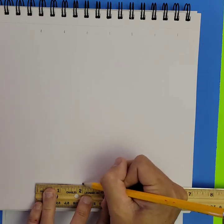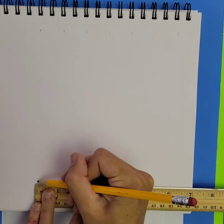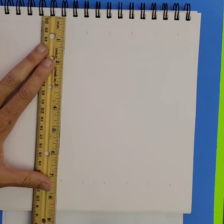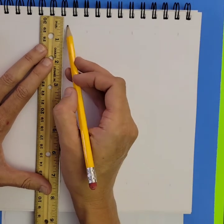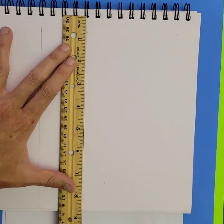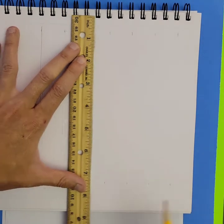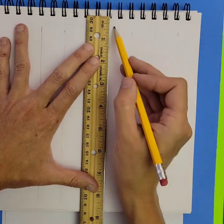So I'm just placing a mark every inch for seven inches, and then I'm going to connect those vertical lines. And again, I'm using a pencil and I'm drawing fairly lightly.